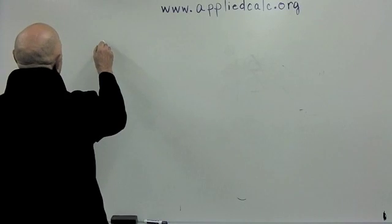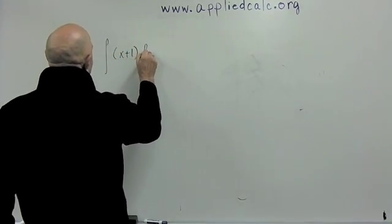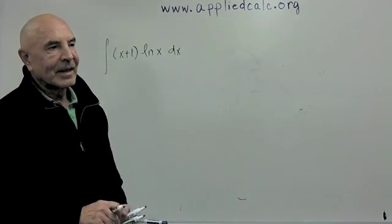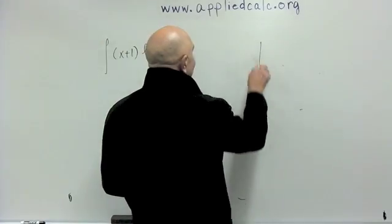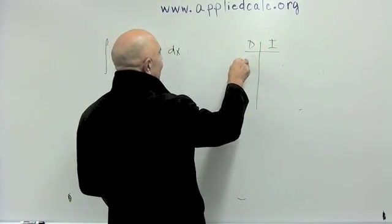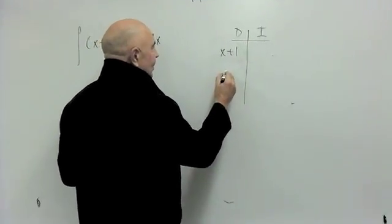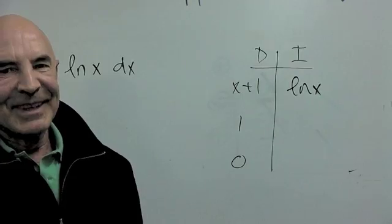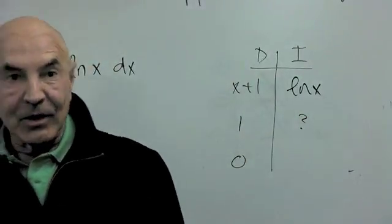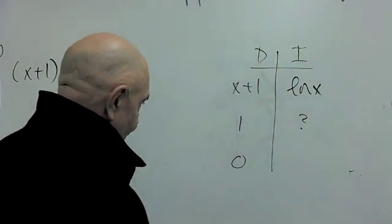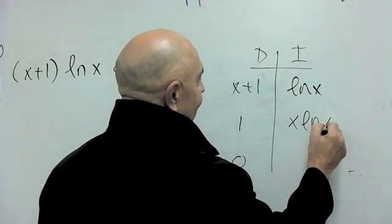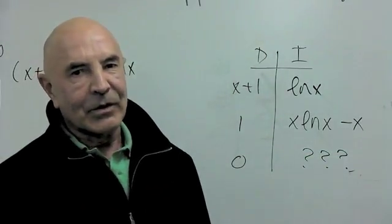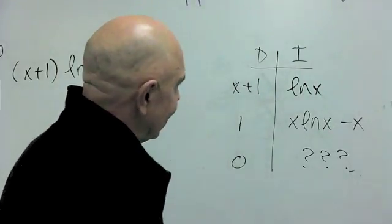Natural logarithms are not great fun to integrate, but I'm going to make it worse — multiply x plus 1 times natural log x. Your first impulse will be: make a D column, make an I column, throw x plus 1 in the D column, differentiate it a couple of times to get 1, then 0, and put natural log x in the I column. But what's the antiderivative of log x? Even if you knew it — x times natural log x minus x — then what goes next? You'd have to do it again. That's even worse. So this approach doesn't seem to work.